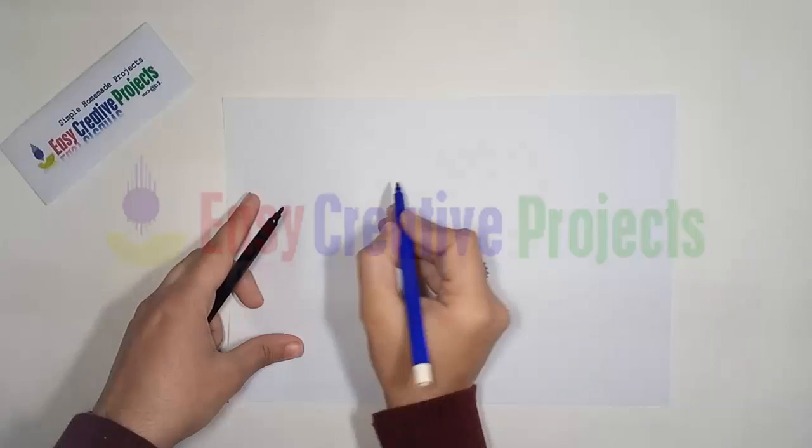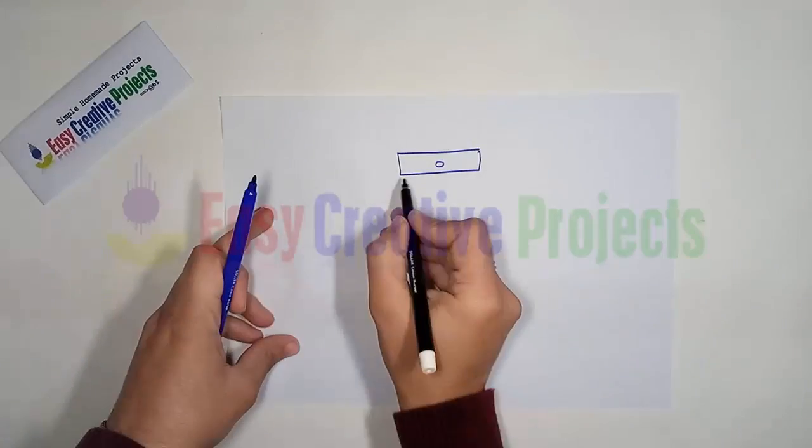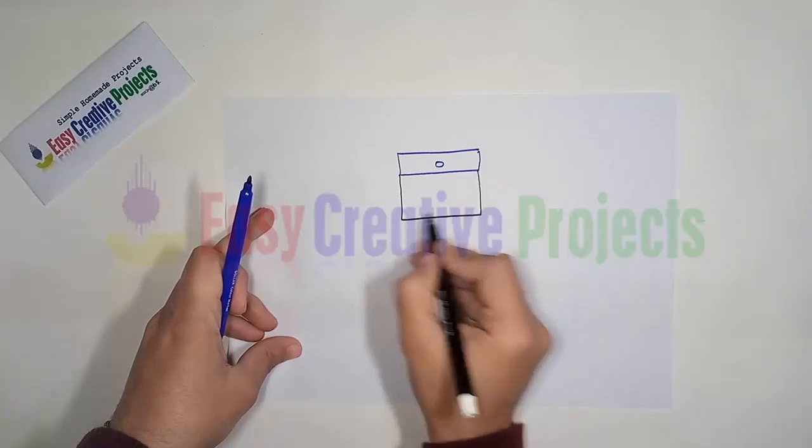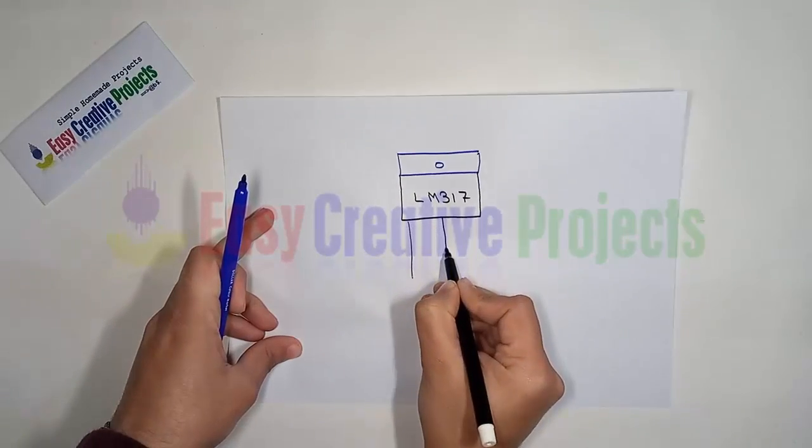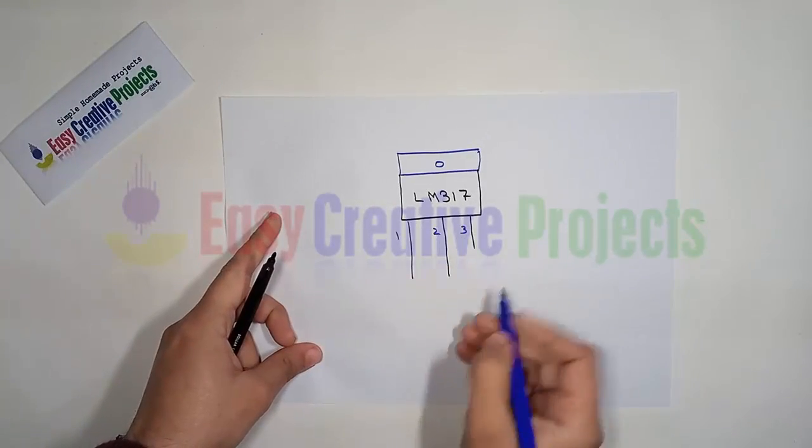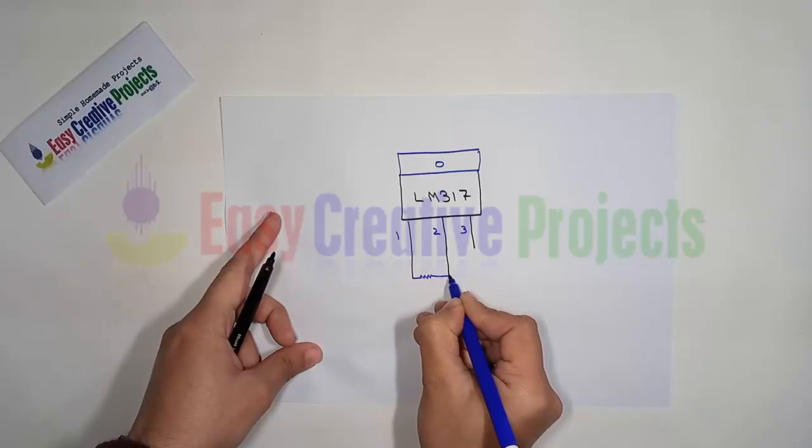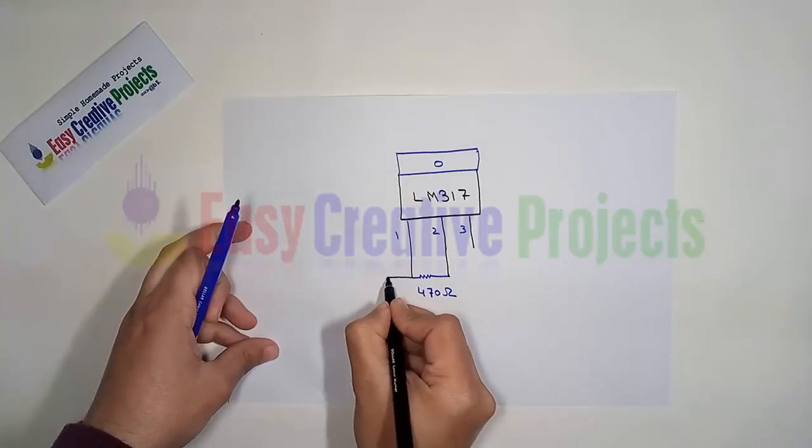First, make the circuit diagram. The LM 317 has 3 pins. Connect the 470 ohm resistor between the first and second pin of the regulator.